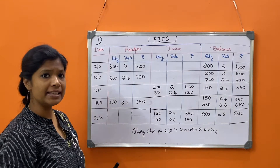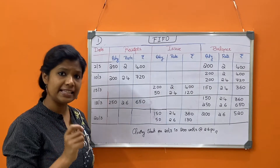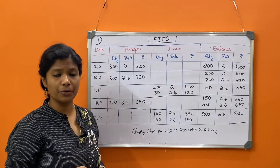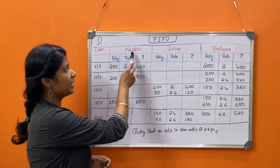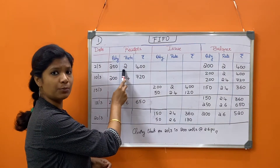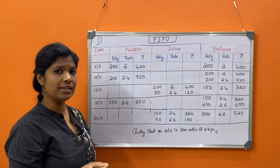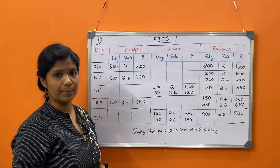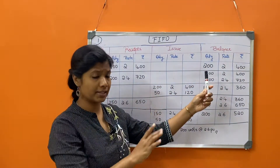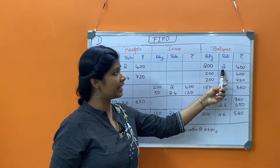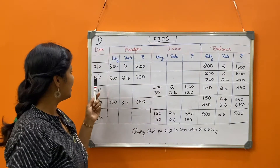Starting with the first question: on 2nd March, the transaction is — received 200 units of goods at rupees 2 per unit. So 200 multiplied by 2 is 400 rupees. On 2nd March, the balance is the same — 200 units at rate 2, totaling 400 rupees.